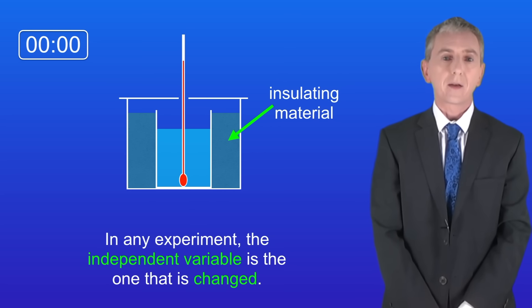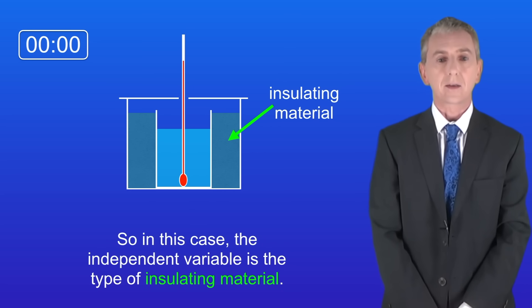Now in any experiment the independent variable is the one that's changed, so in this case the independent variable is the type of insulating material.